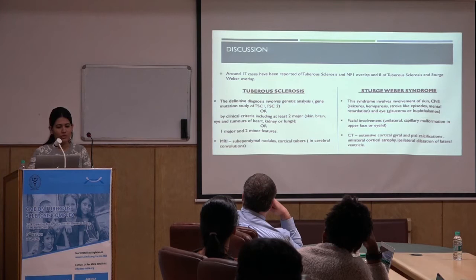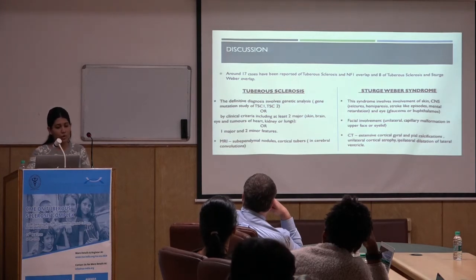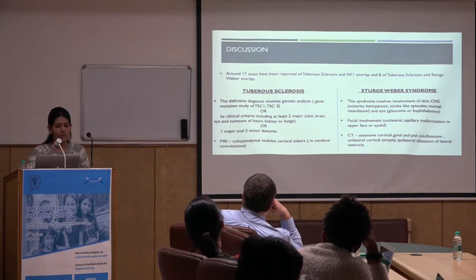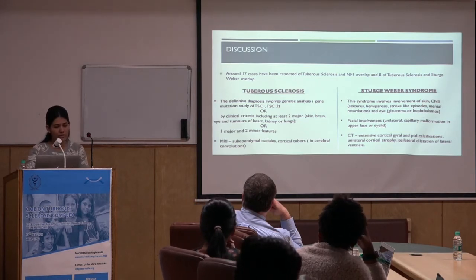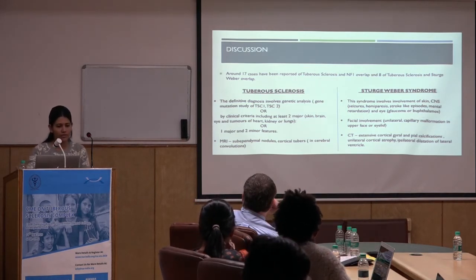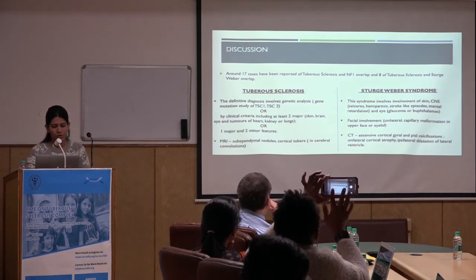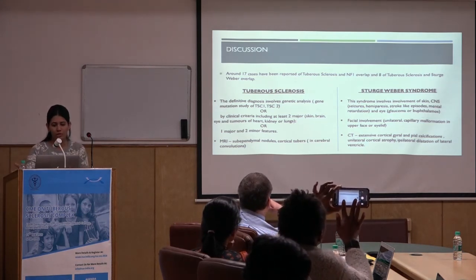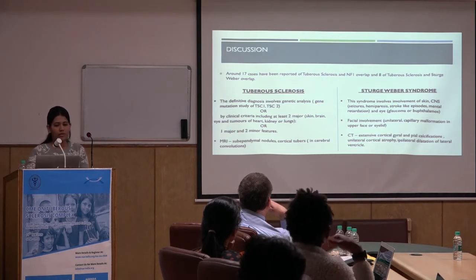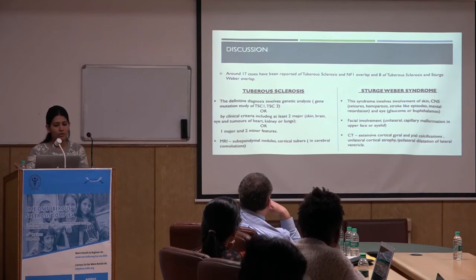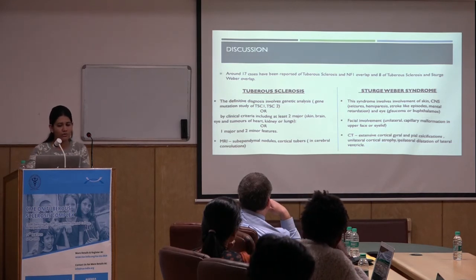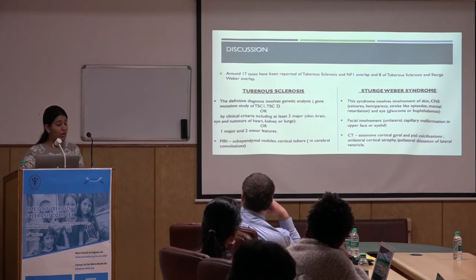The diagnosis of tuberous sclerosis requires a definitive diagnosis via molecular genetic analysis, or we can use the clinical criteria, which requires either at least two major features, or one major and one minor feature. MRI should show subependymal nodules and cortical tubers in the typical combination. For making a diagnosis of Sturge-Weber syndrome, we require involvement of skin and CNS in the form of seizures, hemiparesis, stroke-like episodes, mental retardation, and ophthalmological findings of glaucoma or buphthalmos.